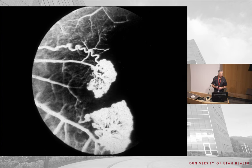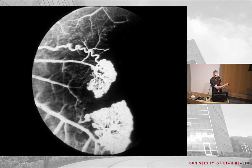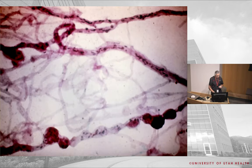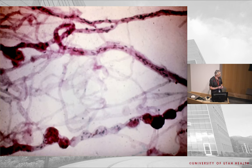This shows a 'sea fan' — neovascularization at the border of a non-perfused peripheral retina. You can see this in retinopathy of prematurity and sickle cell disease. In sickle cell, sickling RBCs cause ischemia, blocking off peripheral retina, and producing these sea fans. A trypsin digest shows the lumpy, bumpy, knobby vasculature from chronic sickle cell damage. Always take a good history in African-American patients with funny peripheral vascular changes to rule out sickle cell.